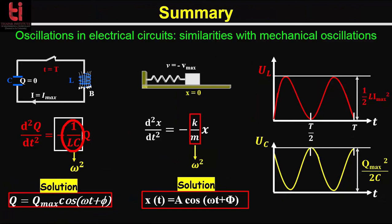Now to summarize: I have discussed the oscillations in an electrical circuit. We saw that these oscillations are represented by a differential equation identical to the differential equation of simple harmonic motion for a mechanical system — that is, for a spring-mass system or a simple pendulum. The solution is identical; only the physical quantities are different. For this electrical oscillator, the energy contributions come from the electric potential energy stored in the capacitor and the magnetic energy ½LI² stored in the inductor. Since there is no resistance, the total energy of the system is constant with time. In the next class I will discuss damped oscillations and forced oscillations.